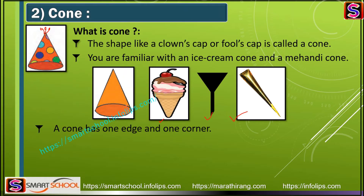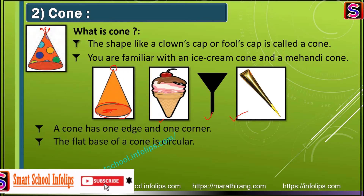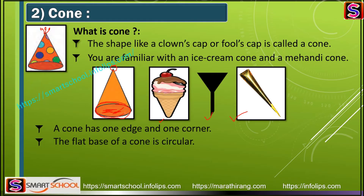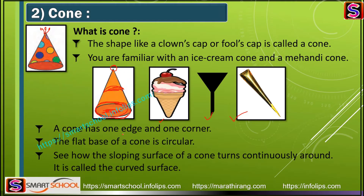A cone has only one edge, and it is a curved edge. It also has only one corner. The flat base of the cone is circular. The sloping surface of the cone that turns continuously around it is called a curved surface.